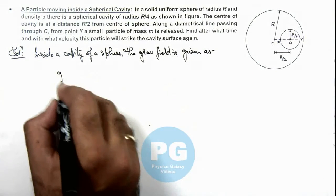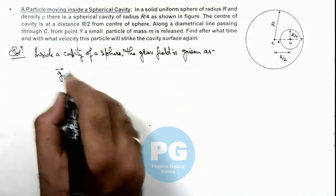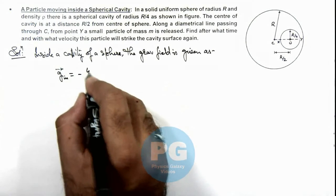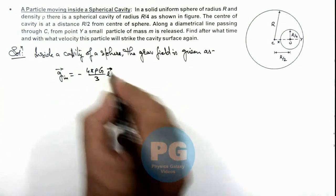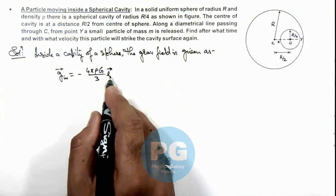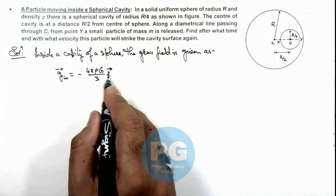this gravitational field g inside vector can be written as negative of 4πρG/3 times l, where l vector is the position vector of center of cavity from the center of sphere.